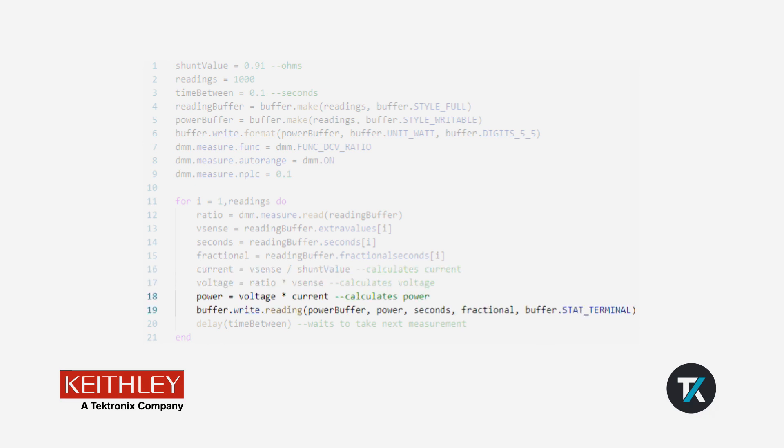The power is calculated using p equals i times v and stored in the power buffer, which allows it to be displayed on the instrument's screen. We wait the amount of time specified in the time between variable and start the loop over, repeating 1000 times based on the readings variable.